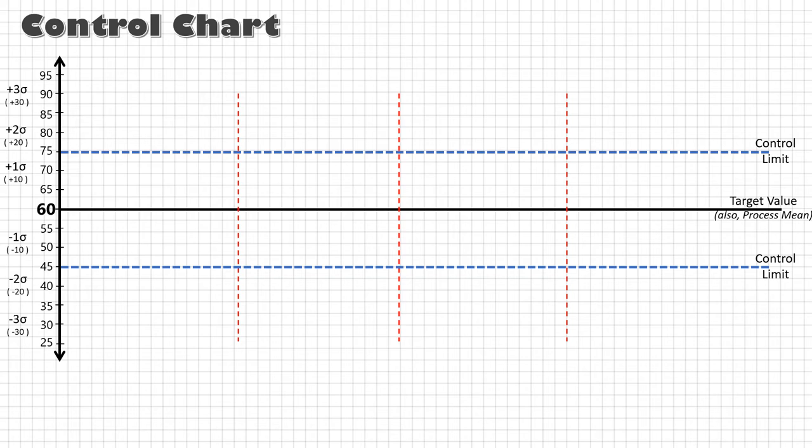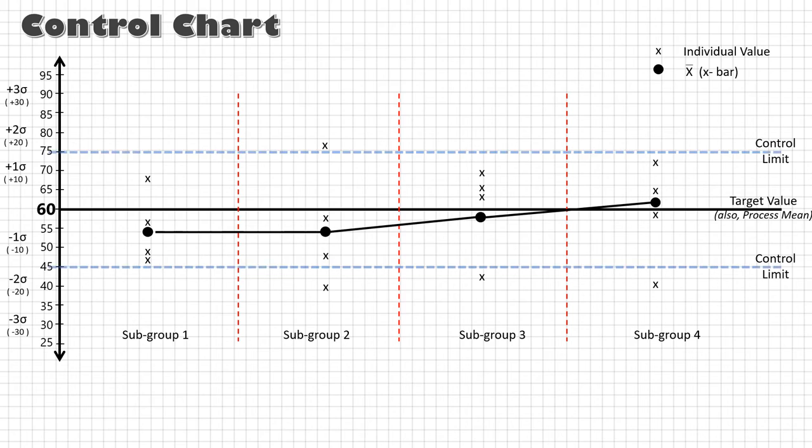So now, in place of getting data of the entire population, with control charts in place I can take few samples from each subgroup in real time, calculate the mean of those samples, and if at any point X-bar goes beyond these new control limits, it indicates that there is a location shift in the process itself. How convenient!